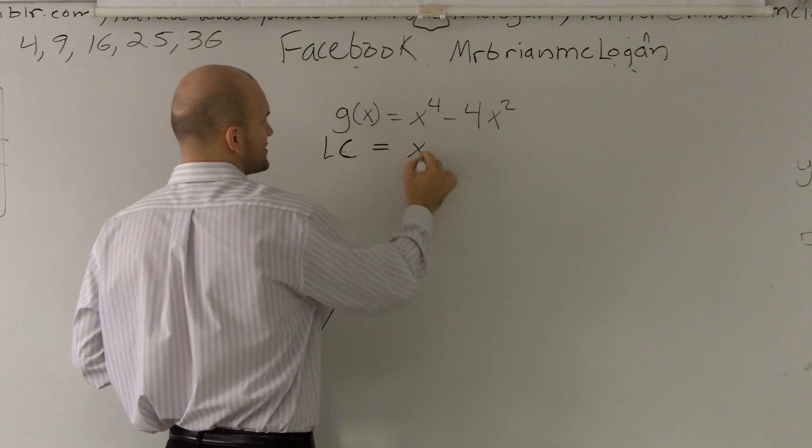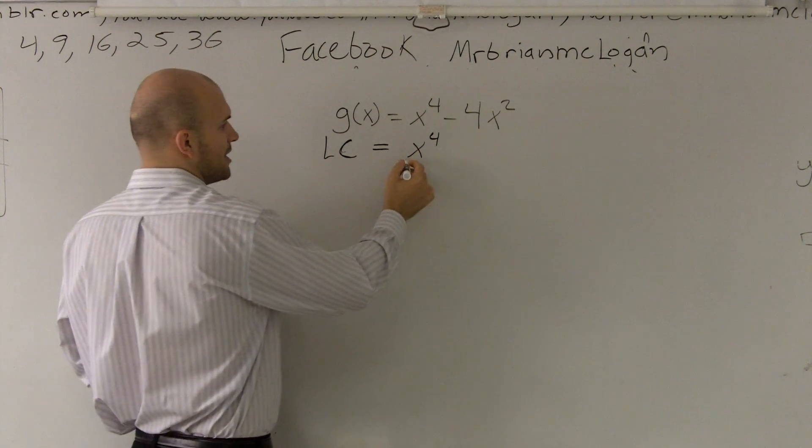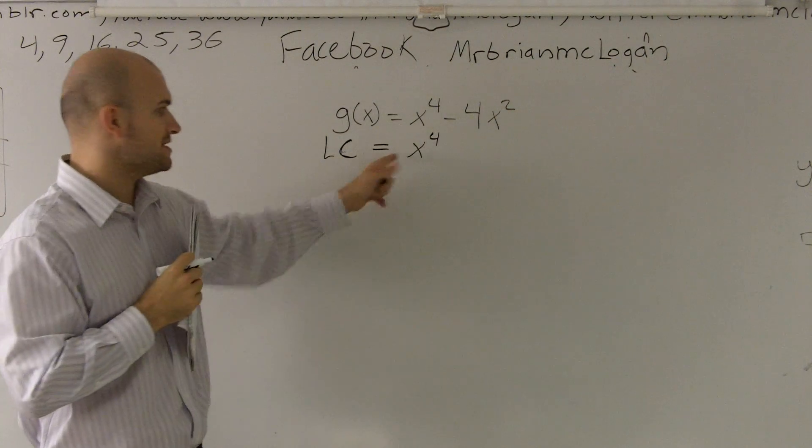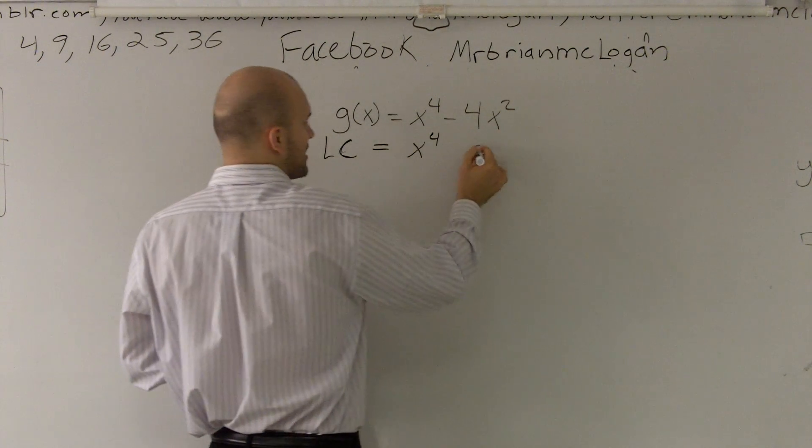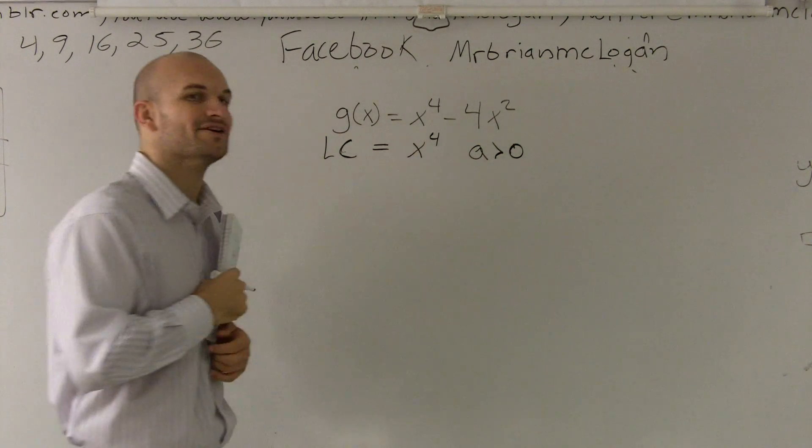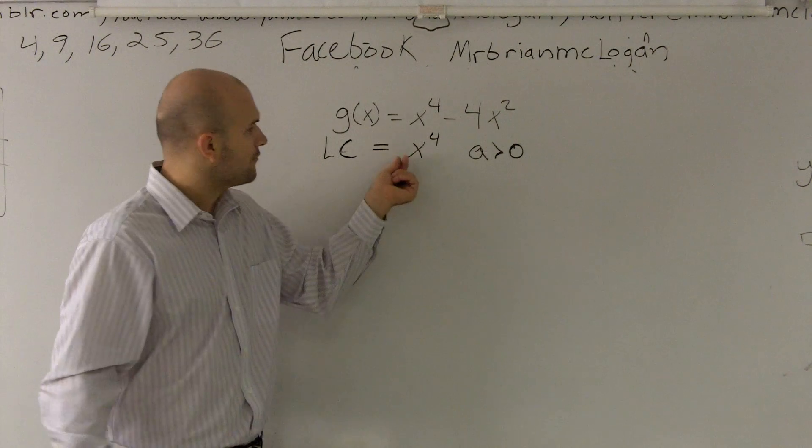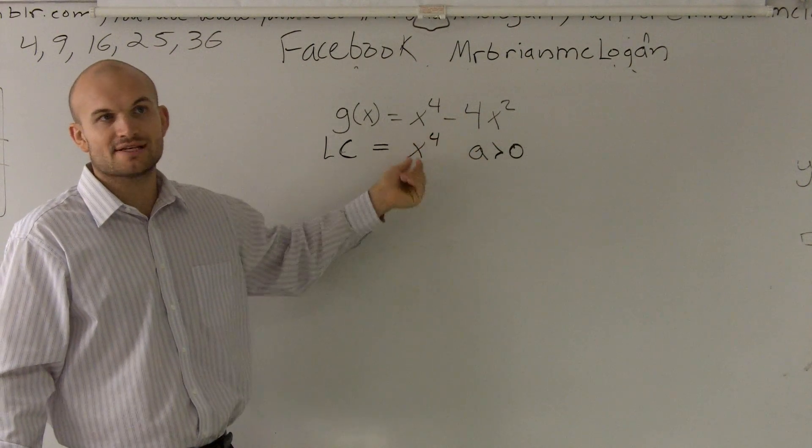Actually, our first term we have x to the fourth. And remember, inside of there, we always have a number that's in front, which is a. And at this point, a is either greater than 0 or less than 0. For this problem, our a is 1. And it is greater than 0. Obviously, it's not negative.